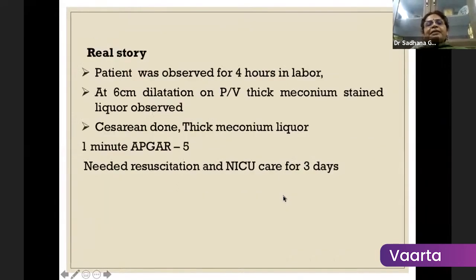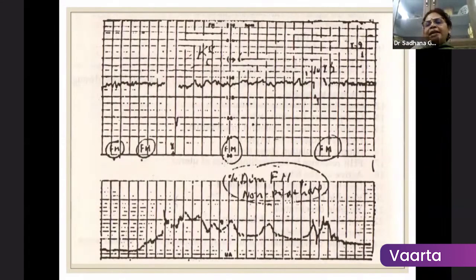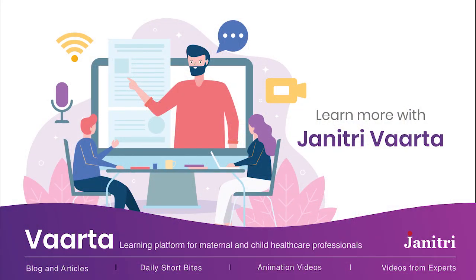Next, next is CTG. So this same patient, what happened? She was observed for 4 hours in labour. She got uterine contraction, but at 6 centimeters, we found the thick meconium stain and a cesarean was done. One minute APGAR score was 5 and baby needed an ICU care. So this simple admission CTG actually gave rise to the alertness of all staff and we were particularly seeing that this was the meconium stain and could do the cesarean section or deliver the baby in time.